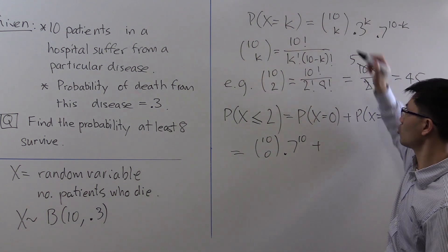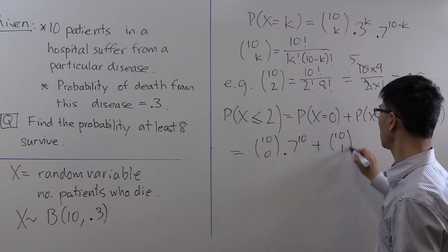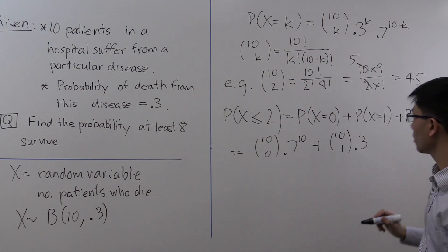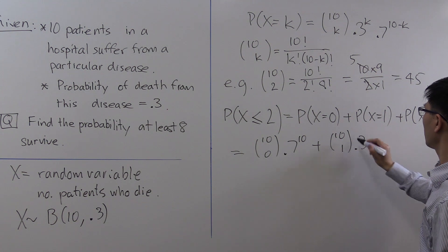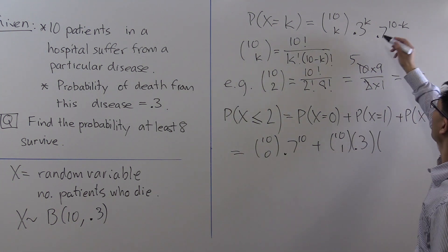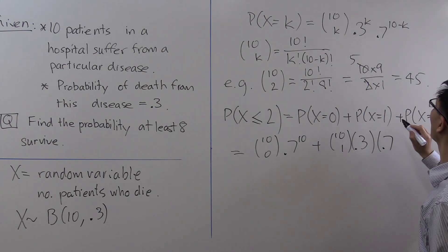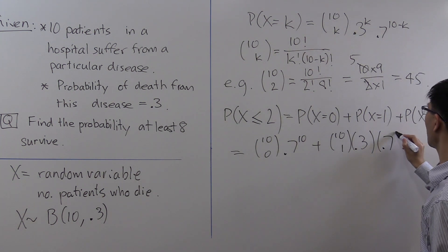10 choose 1 times 0.3 to the k equals 1, that's just 0.3, times 0.7 to the 10 minus 1, which is 9.